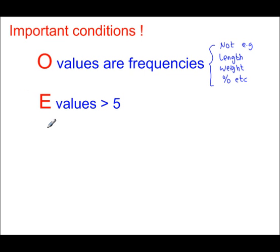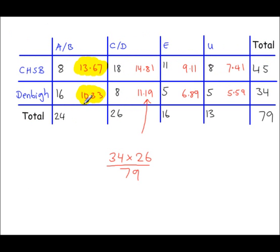At this stage, check to make sure that the E values worked out are all more than five. And looking at the E values here, every single value is more than five. If not, then pooling of categories is required. Have a look at a separate video for that.